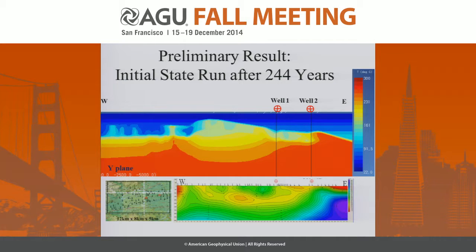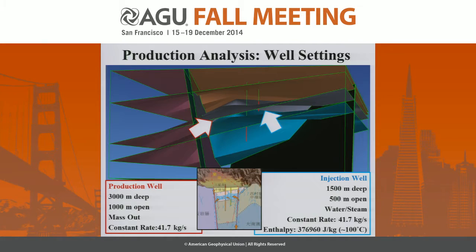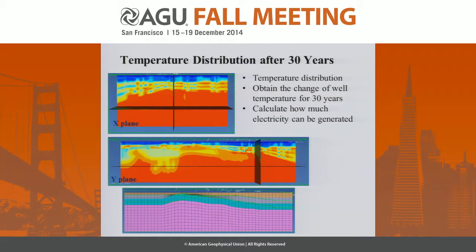Based on this initial state, we can continue to run the production analysis by adding wells. We use the exploration well as the production well and place an injection well one kilometer away. We run it for 30 years. The production well is 3,000 meters deep with a constant rate of 42 kilograms per second. The injection well is 1,500 meters deep with a constant rate, injecting 100 degrees C water.